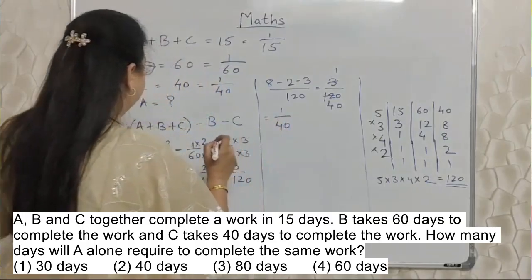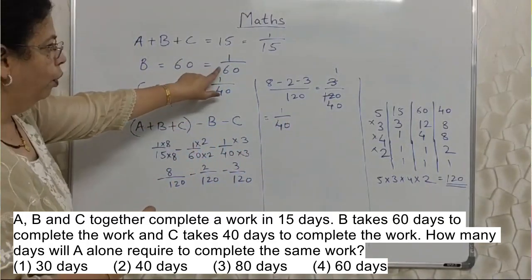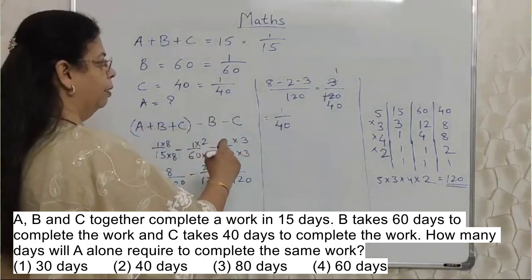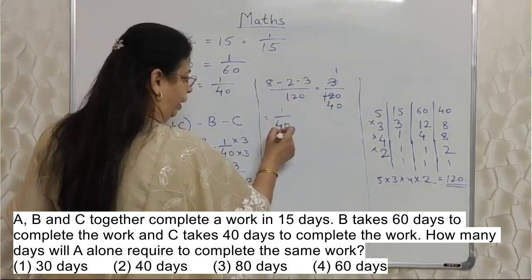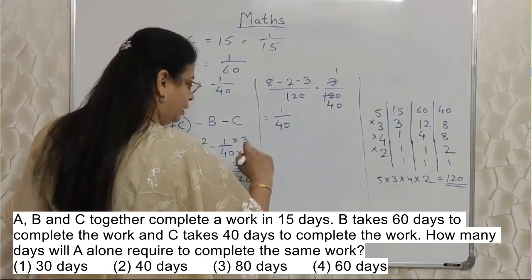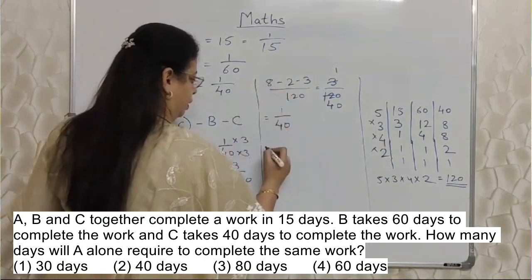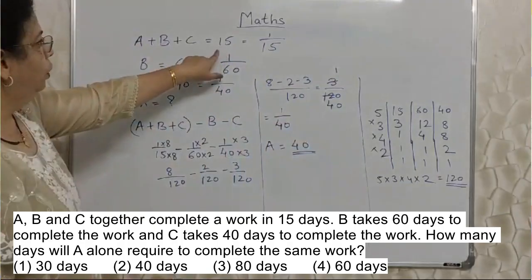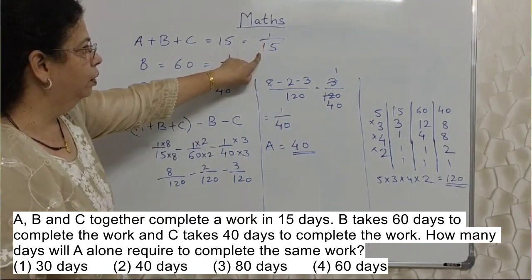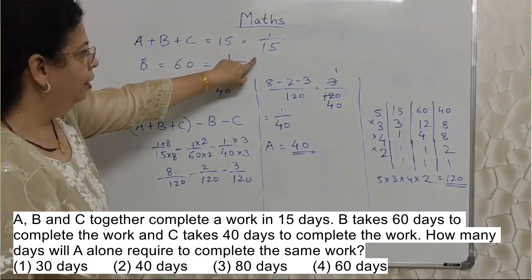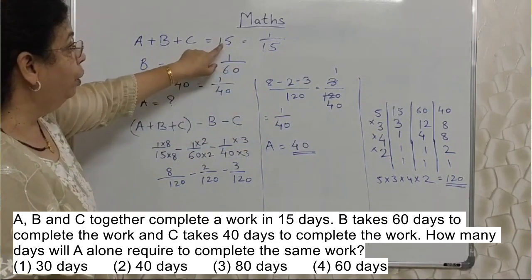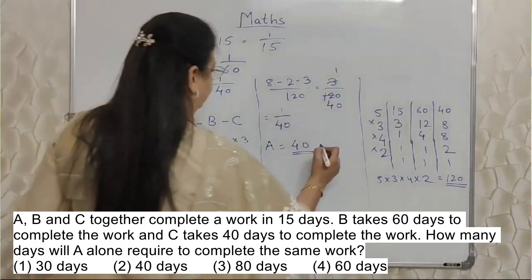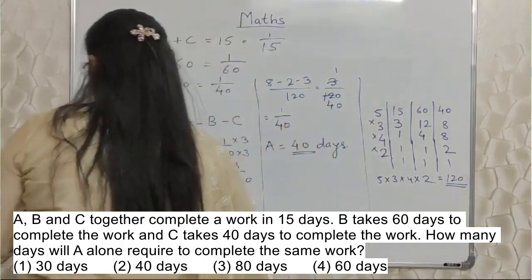See, this calculation we have done is for 1 day — this is A's 1 day work. A can complete 1 upon 40 part of the work in 1 day. Means total work will be the reciprocal of this. So A will complete the entire work in 40 days. So 40 days is the answer — A can complete the entire work in 40 days.